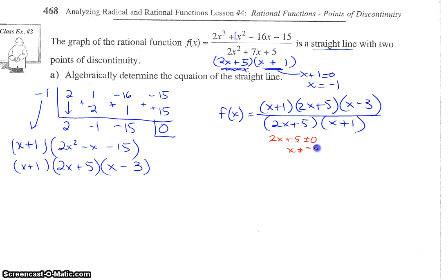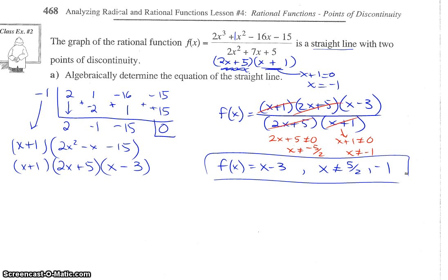And from here, x plus 1 can't equal 0, so x can't equal negative 1. So we have those restrictions. Now we can cancel off our common factors, and we are left with f(x) equals x minus 3, where x cannot equal 5 halves or negative 1. And there we go. So, that's the equation of the straight line for our original rational function.